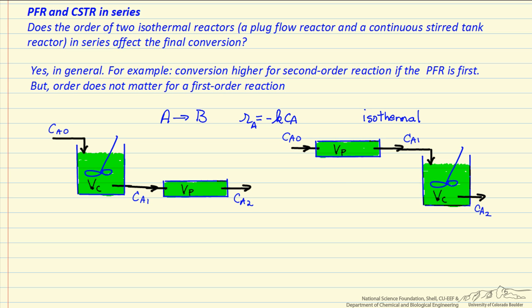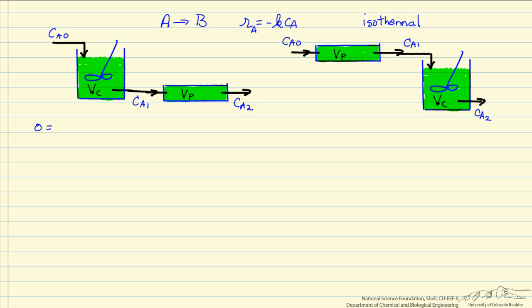So what we are going to do is write down the mass balances. First we are going to write the mass balance for the CSTR. It's steady state, there is no accumulation. There is flow of A into the system, the feed concentration is Ca0, small v is the volumetric flow rate, so this is the molar flow rate in, the molar flow rate out.